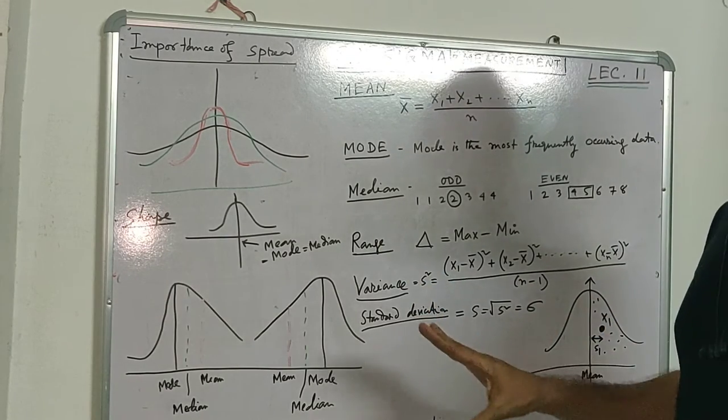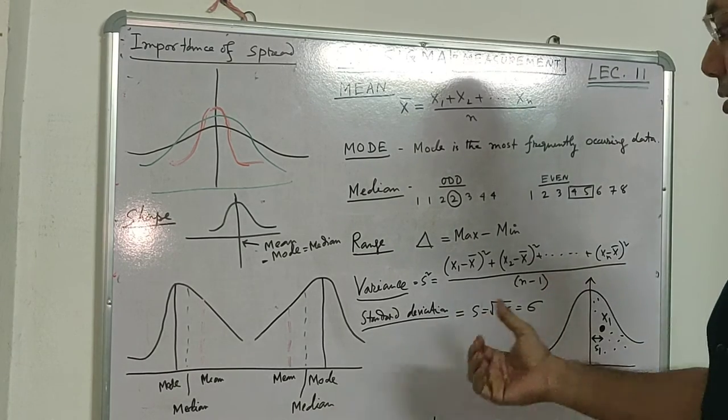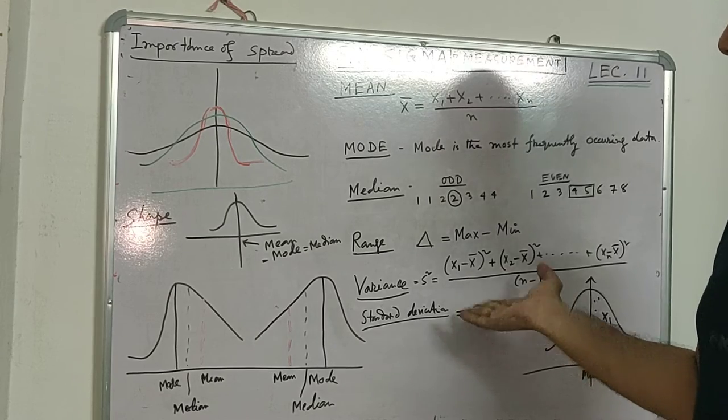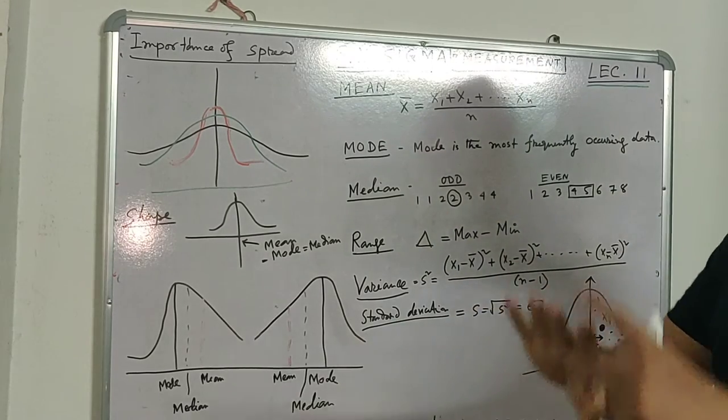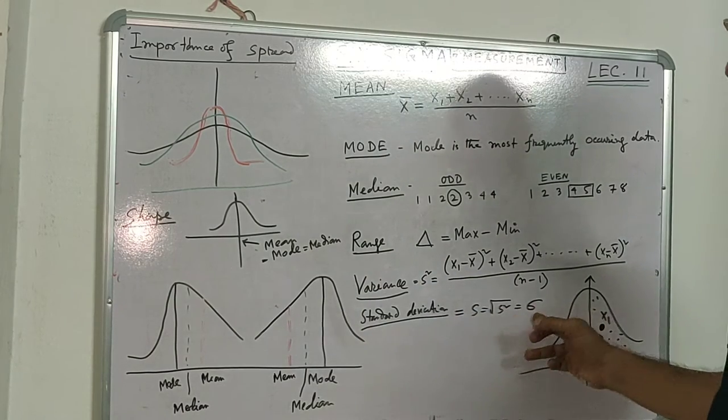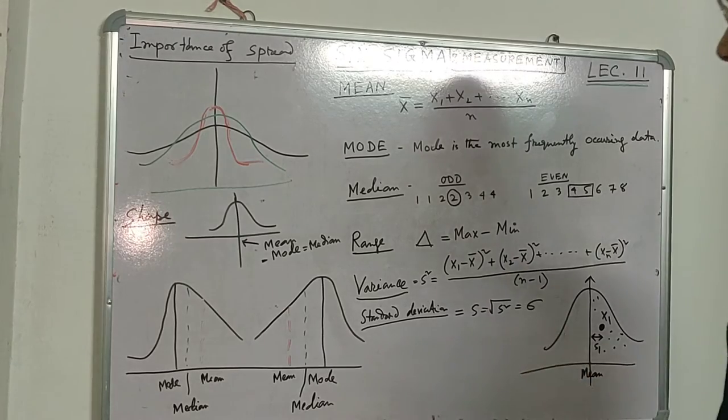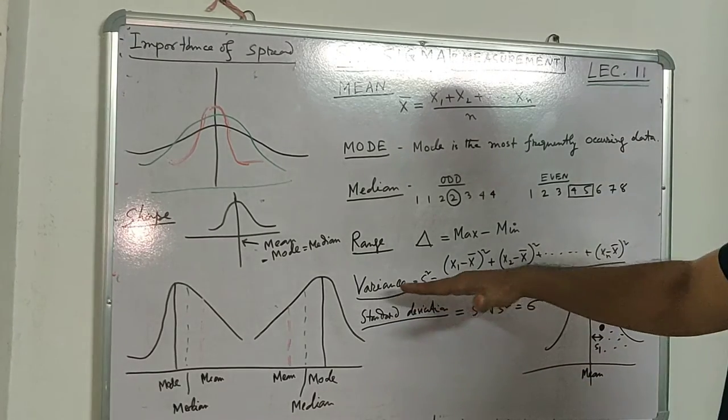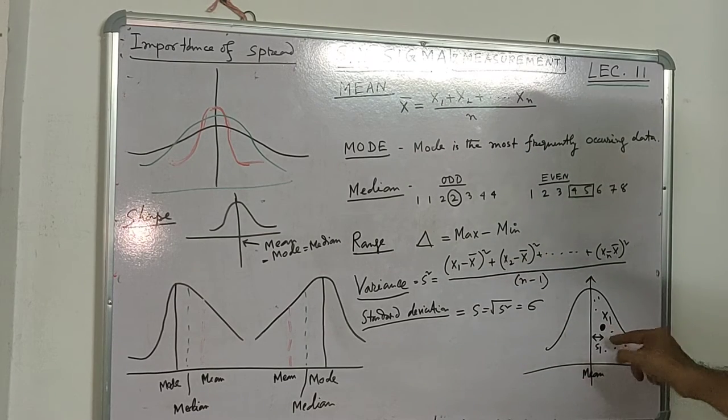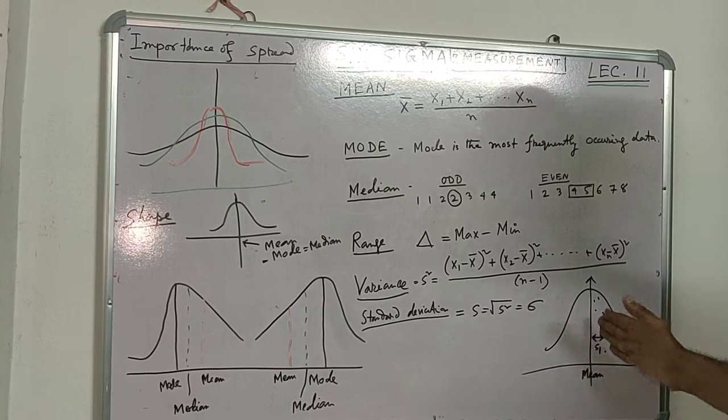Standard deviation is the square root of variance, which we can denote as sigma or s. For a whole population or process, we denote sigma. But we cannot collect all data—this is not practical—so we deal with samples. For samples, we denote s.